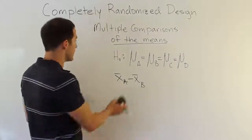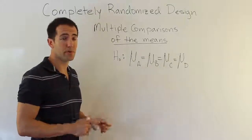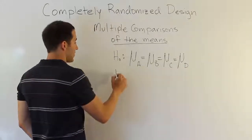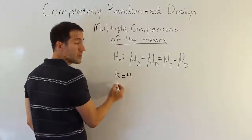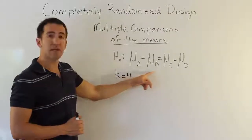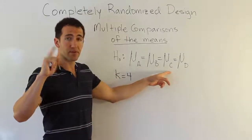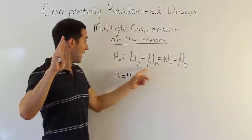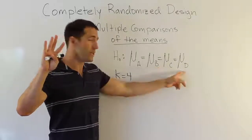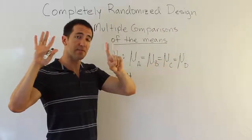The first thing I want to address is how many different comparisons must be made. Take this example on the board: we have four means — four different treatments, A, B, C, and D — so k equals four. We'd compare A to B (one), A to C (two), A to D (three), B to C (four), B to D (five), and C to D. That gives us six different comparisons.